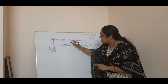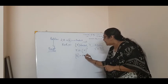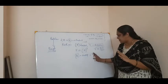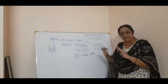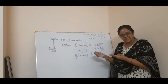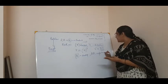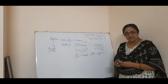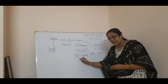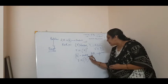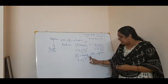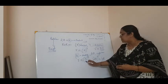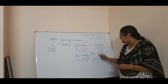Now, if you change the concentration of B — if the concentration of B is doubled by keeping the concentration of A constant — experimentally it is found that the rate of reaction is 4 times greater. Then I can write R is proportional to B to the power 2, because 2B raised to square gives 4 — that is 4 times the concentration. So the rate of reaction is increased by 4 times.